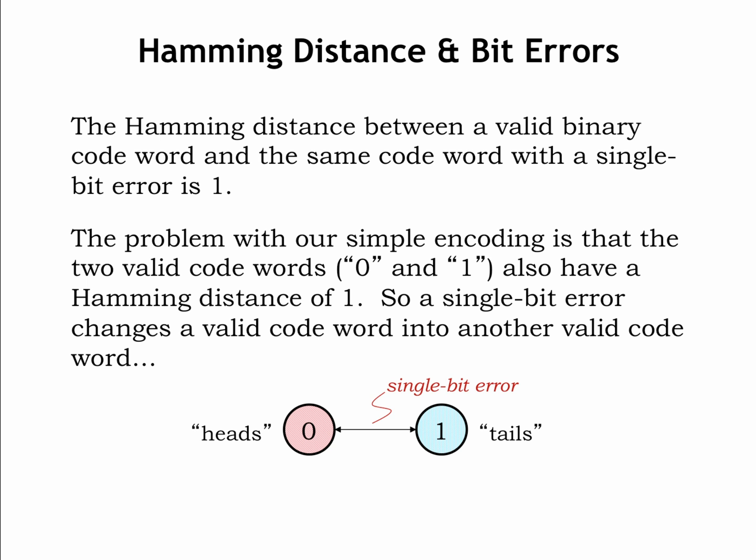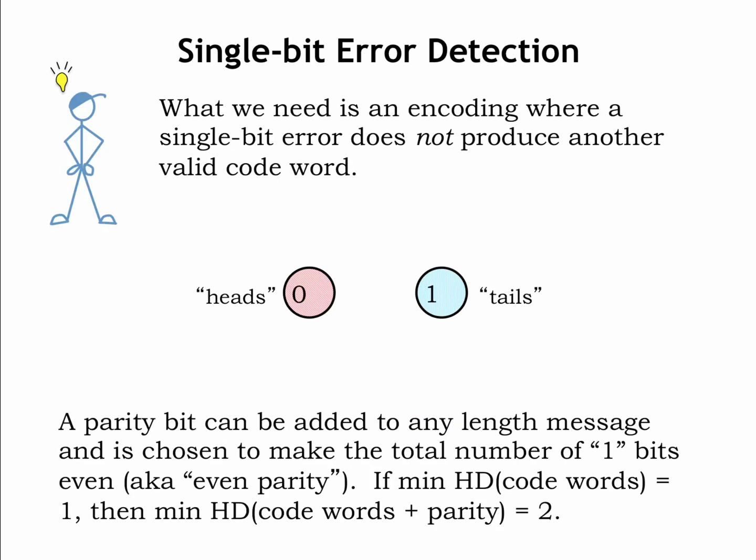Let's figure out how to solve our problem. The insight is to come up with a set of valid codewords such that a single-bit error does not produce another valid codeword. What we need are codewords that differ by at least two bits. In other words, we want the minimum hamming distance between any two codewords to be at least two.